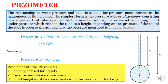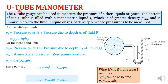Next is the manometer — a device used to measure pressure. For the manometer, we focus on overcoming the limitations of the piezometer. The U-tube manometer can be used to measure the pressure of either liquids or gases, so the first limitation of the piezometer — that only liquids could be used — is overcome here.